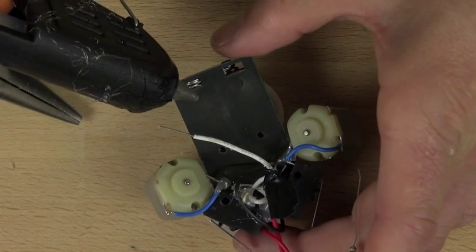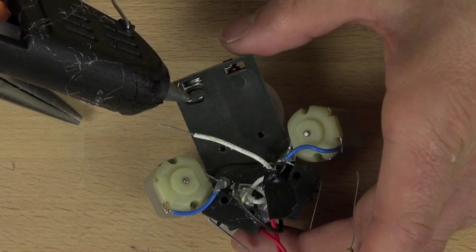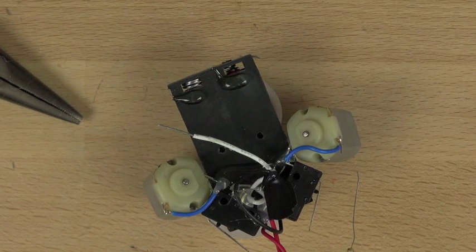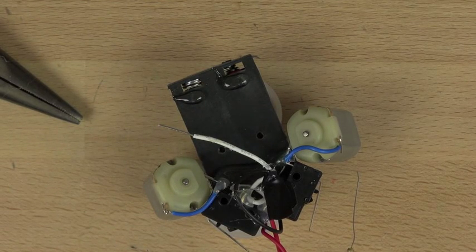Now we're going to install our on-off switch and the switch that will control our LEDs. So we're going to put two about half-dime sized blobs of hot glue down on the back of the bot.